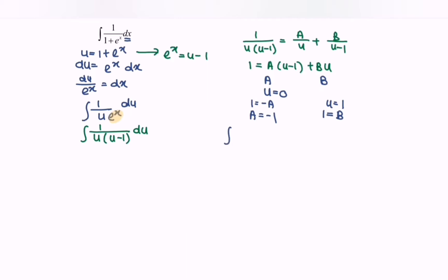Finally, integrate 1 over u times u minus 1 with respect to u, and we will have the integral of negative 1 over u plus 1 over u minus 1 with respect to u.